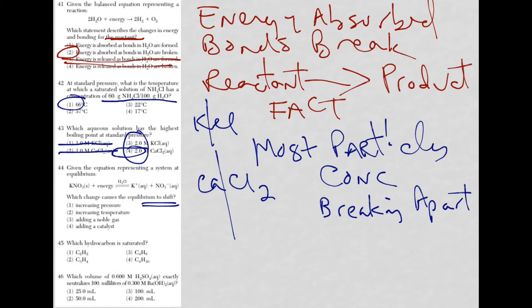Well, increasing pressure, that only occurs for a gas. Take a look at this equation. There's no gases. Can't be pressure. Increasing temperature, is that going to shift the equilibrium? You bet. Because increasing temperature is adding energy, so it's going to shift, in this case, to the right. They didn't ask that. They just wanted to know about the shift. Choice three, adding a noble gas. Gas not having an effect here, because pressure doesn't have an effect. And adding a catalyst, it will speed up both the forward and the reverse, so it cancels each other out.